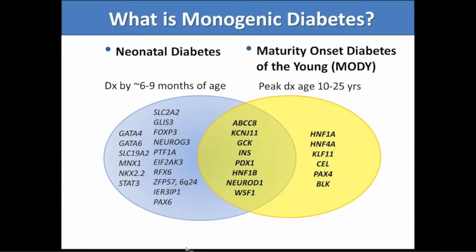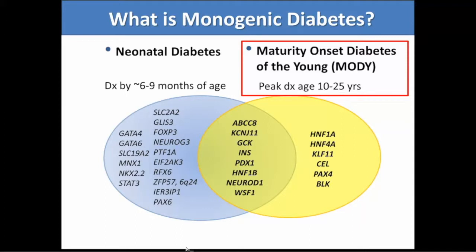When we think of monogenic diabetes, there are two main categories: neonatal diabetes and maturity-onset diabetes of the young, or MODY. Adults are typically going to be thinking about MODY because the difference in these two conditions has to do mostly with the time of onset. Neonatal diabetes is typically diagnosed by the first 6 to 9 months of age, whereas MODY is later in life with peak diagnosis between 10 to 25 years — overlapping more with type 1 and type 2 in terms of age of onset.